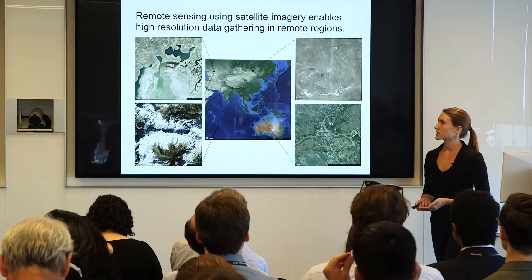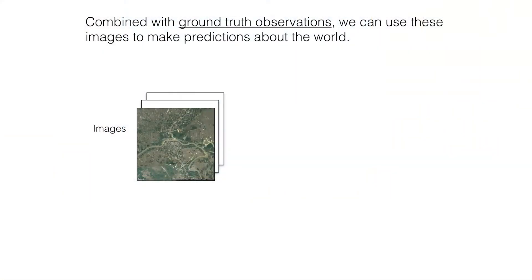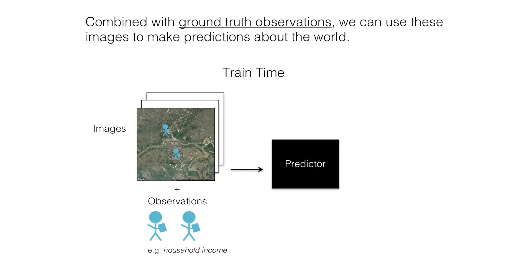So what does training this predictor actually look like? Let's focus on wealth estimation in Cambodia. You're going to download a bunch of images. You're either going to, if you're lucky, send out people to take surveys and knock on doors and ask about annual income, or use data sets already available to you. From these images and observation pairs like household income, you learn a predictor — a function that takes in images and outputs a predicted household income estimate for houses in that image.